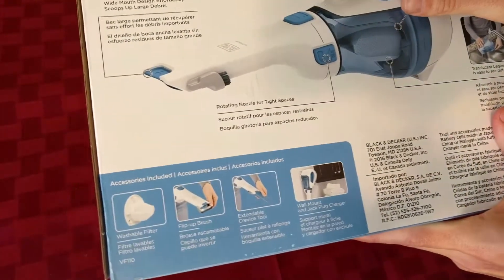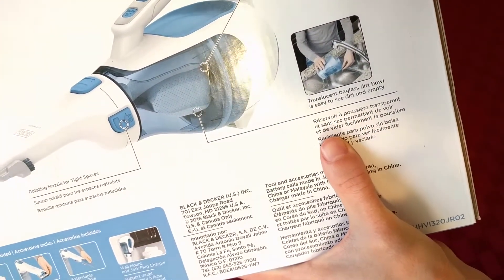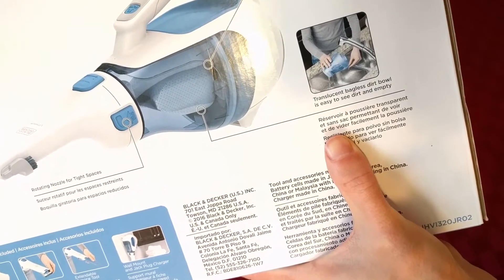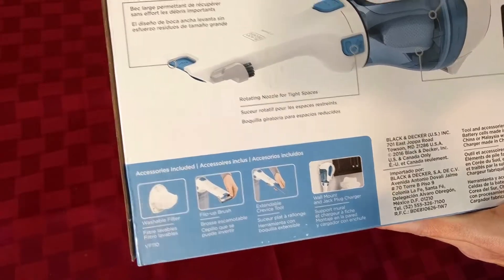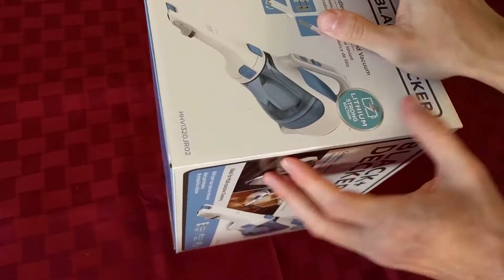Bagless dirt bowl. I'm gonna start using that as an insult. You bagless dirt bowl. Rotating nozzle for tight spaces. Here starts the unboxing. The most exciting part.